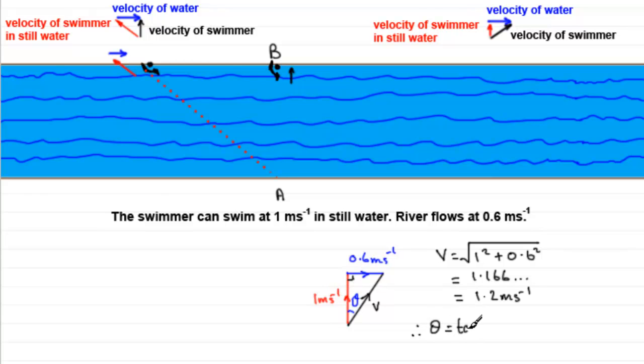And if you work that one out, you end up with 30.963 and so on degrees. And if you round that to one decimal place, you're going to get 31.0 degrees to 1dp.